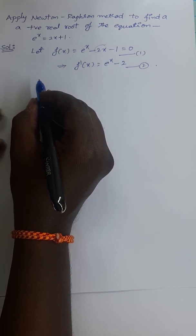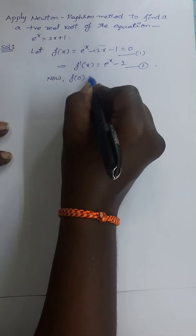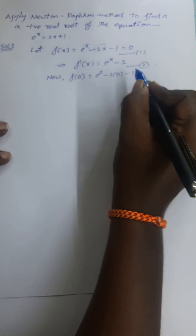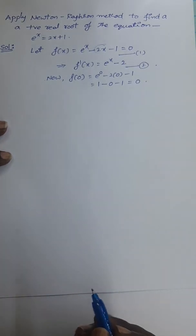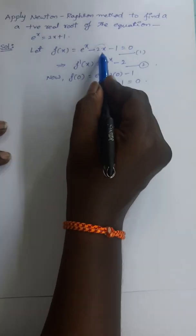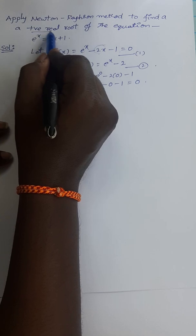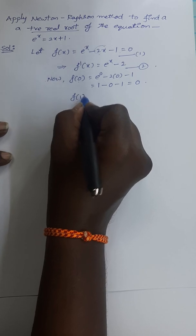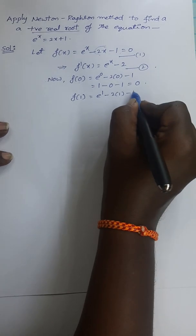Now we investigate the initial approximations for the required root. For that purpose, calculate the function values at various values. f(0) = e^0 - 2(0) - 1 = 1 - 0 - 1 = 0. Unfortunately, we observe that 0 satisfies the given equation, so 0 is a root of this equation, but we need to find a positive real root. Since 0 is not a positive root, we have to calculate f(1).